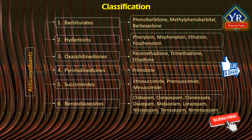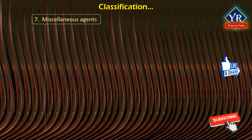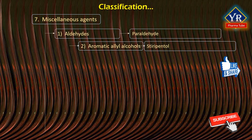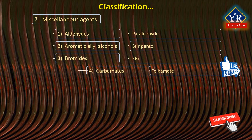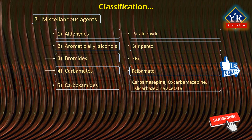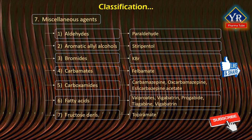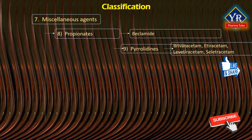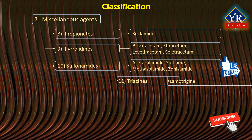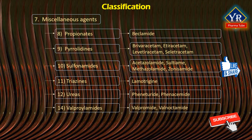Number six: benzodiazepines, like clobazam, clonazepam, clorazepate, diazepam, midazolam, lorazepam, nitrazepam, temazepam, and nimetazepam. Number seven: miscellaneous agents. Several miscellaneous anticonvulsant agents are aldehydes, aromatic allyl alcohols, bromides, carbamides, carboxamides, fatty acids, fructose derivatives, propionates, pyrrolidines, sulfonamides, triazines, ureas, valproamides, and others. The examples of drugs in each category have been given in the figure.